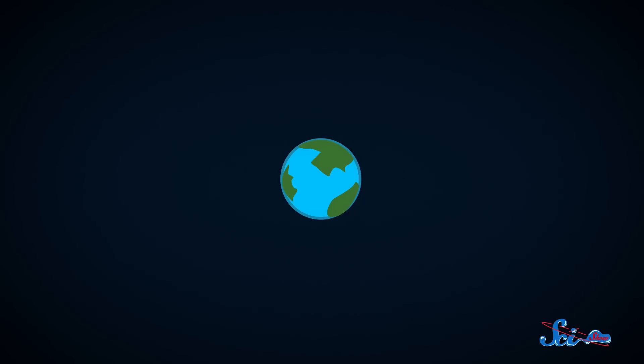Temperatures would be tolerable, and models predict that it could have active volcanoes, a dense atmosphere, and liquid water. Sounds a lot like home, but there are some differences, too. For one thing, the planet's diameter is 60% larger than Earth's, and while it could be rocky, it might also be gaseous.